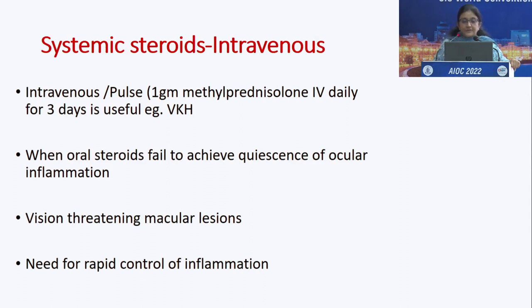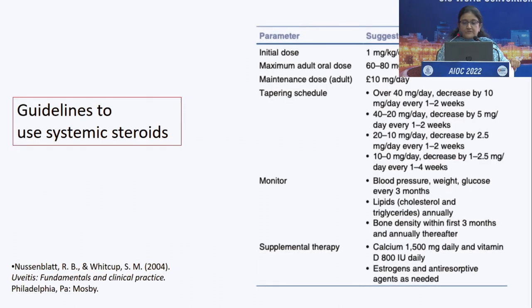Intravenous pulse therapy — given in a dose of 1 gram per day for 3 days — is very useful in etiologies like VKH. It is also used when oral steroids fail to achieve quiescence of ocular inflammation, for vision-threatening macular lesions, and when rapid control of inflammation is needed.